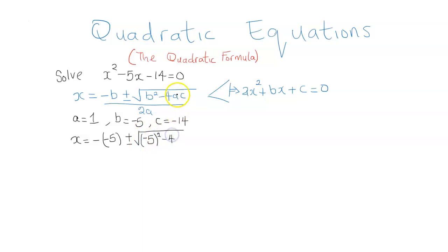Then minus 4ac. a is 1 and c is negative 14, so this is negative 14. Then divided by 2a. a is 1, that's 2 times 1.